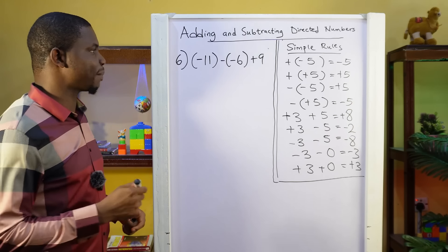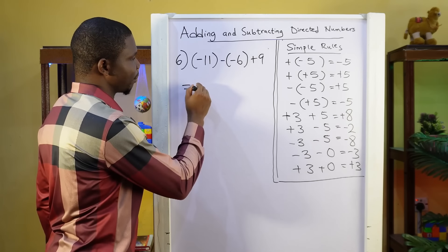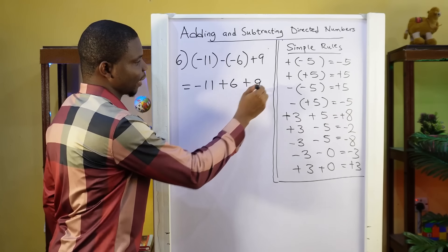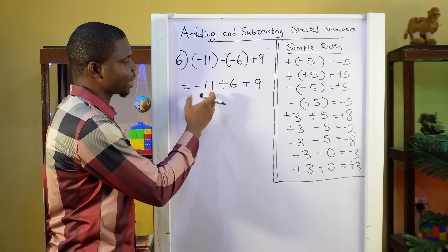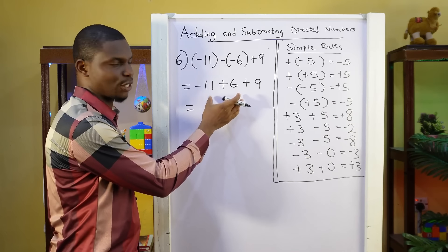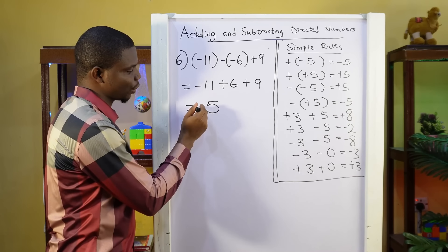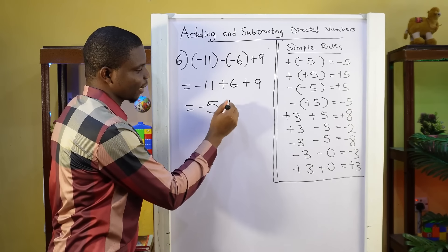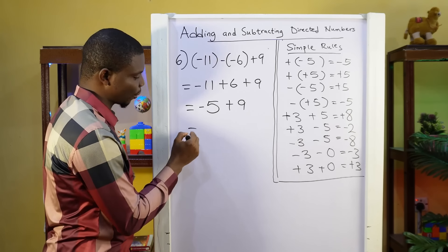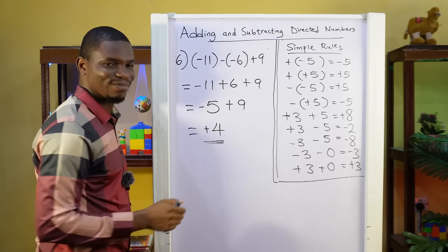Question 6: minus 11 minus minus 6 plus 9. First we open the bracket: minus 11. Minus changes the sign inside the bracket, so this will be plus 6, plus 9. We take two at a time: minus 11 plus 6 — the signs are different, so we find the difference: 11 minus 6 is 5. We take the sign of the bigger number, giving minus 5, then plus 9. The signs are different: 9 minus 5 is 4. We take the sign of the bigger number, which is plus 4.